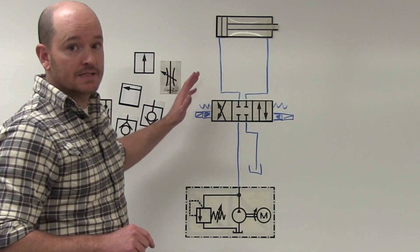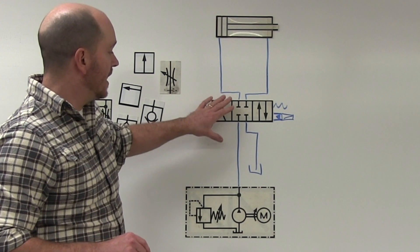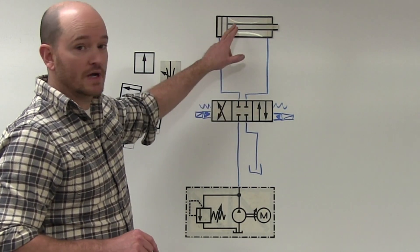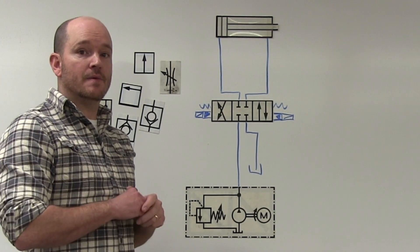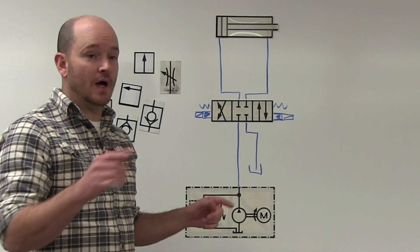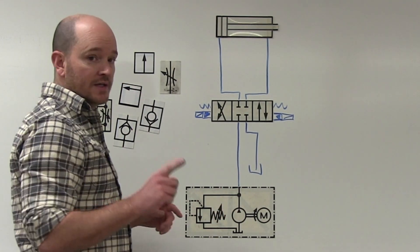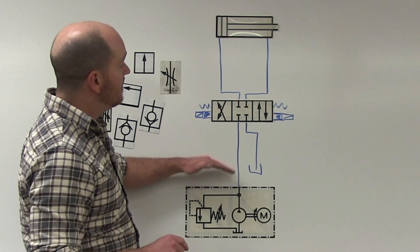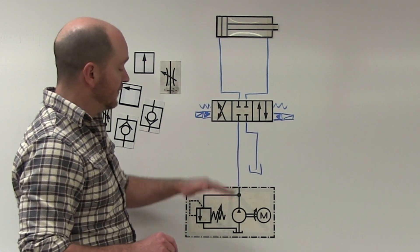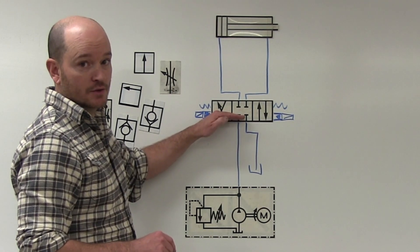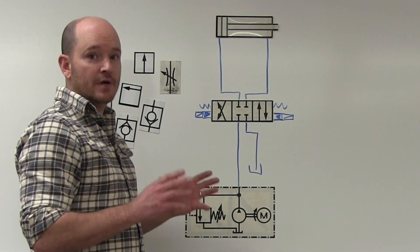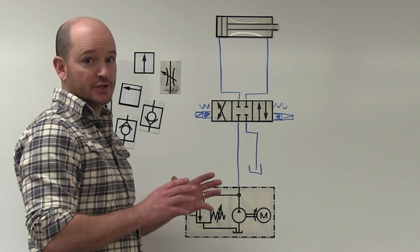Here I have a very basic fluid power hydraulic 4-3 directional control valve controlling a cylinder. Everything that I'm going to talk about here would remain perfectly true for pneumatics as well. So if I'm going to put a device before my directional control valve, so that's between my power source and my directional control valve, I do not require a bypass check valve.